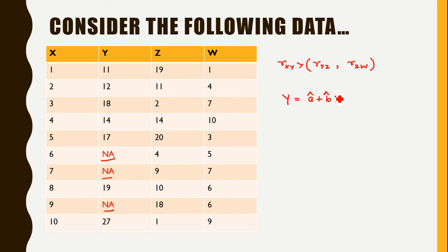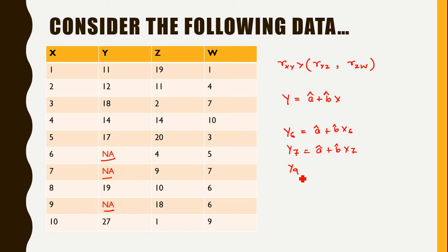We estimate the parameters A and B, and then predict the missing values. For example: Y6 equals A-hat plus B-hat times X6; Y7 equals A-hat plus B-hat times X7; and Y9 equals A-hat plus B-hat times X9. This is the idea of using simple linear regression to predict missing values. It's not necessary to restrict to simple linear regression — we can also use multiple linear regression models to predict missing values if we can identify suitable predictors.